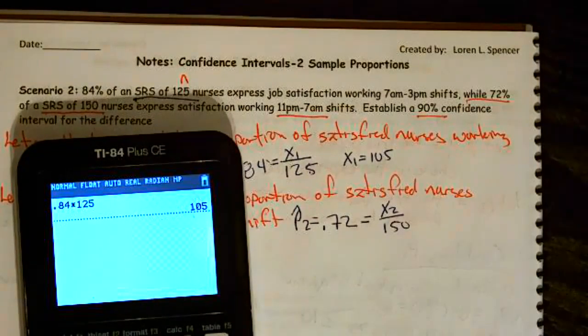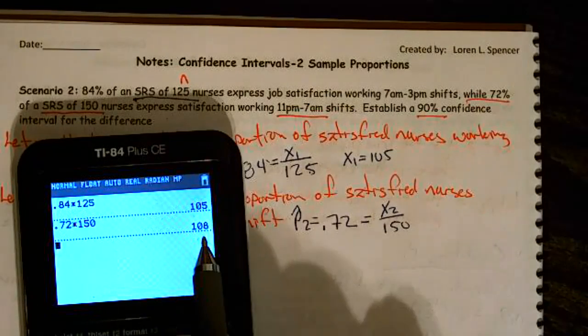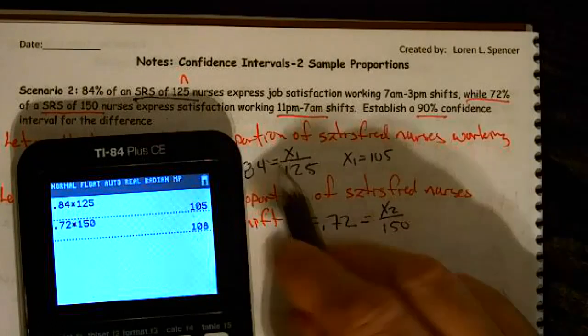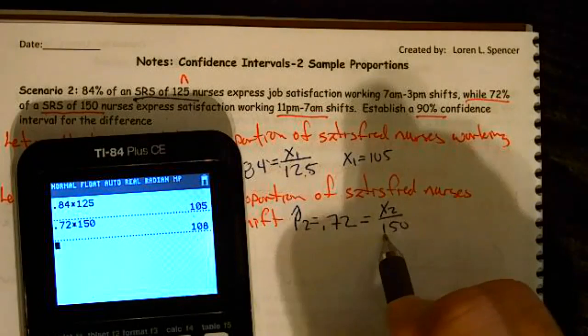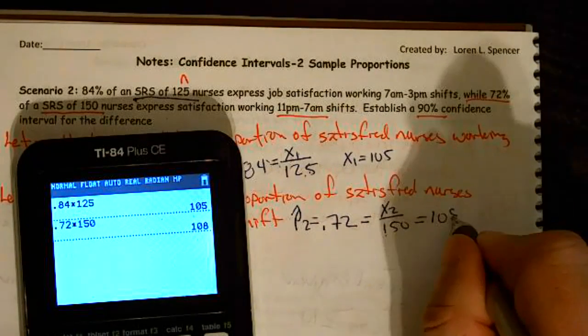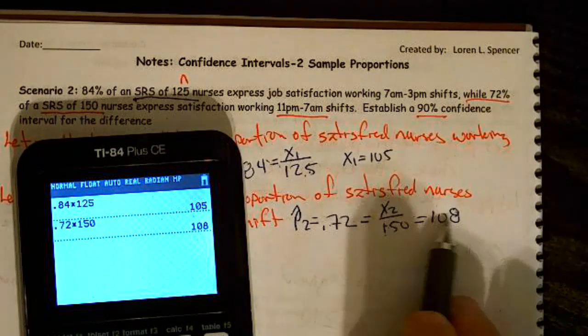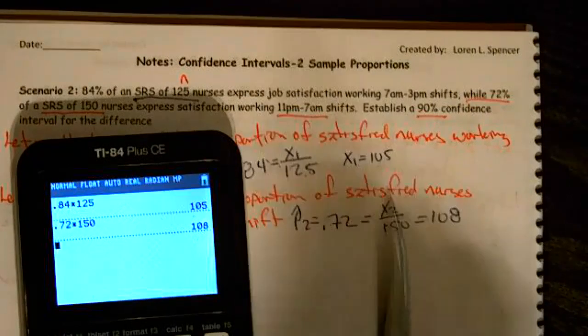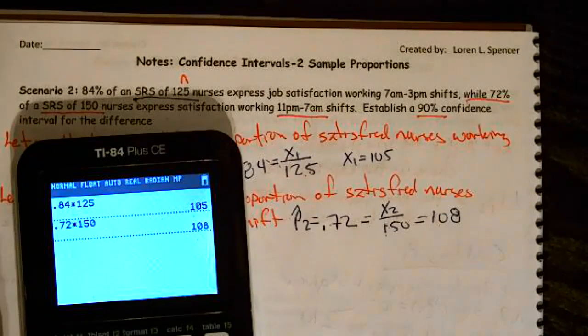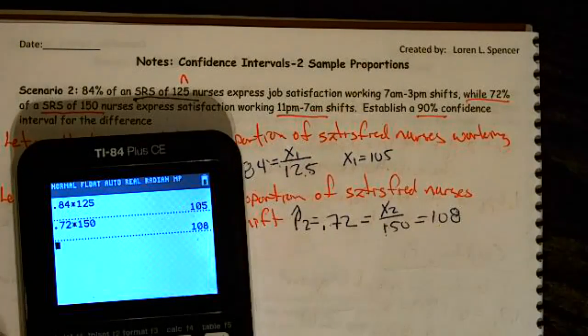We're going to need that. That's super, super important. It's a bit tricky. I have to do the same thing here. 0.72 times 150. And it also has to be a whole number. So x1 and n1 have to be whole numbers, and x2 and n2 have to be whole numbers. And again, you're probably going, how did he get that? I just multiplied 0.72 times 150, 108. 84 times 125, 105. When we run this, I'll show you what happens if you use a decimal. If you use a decimal, it won't work. So this has to be a whole number. So you always have to round to the nearest whole number.